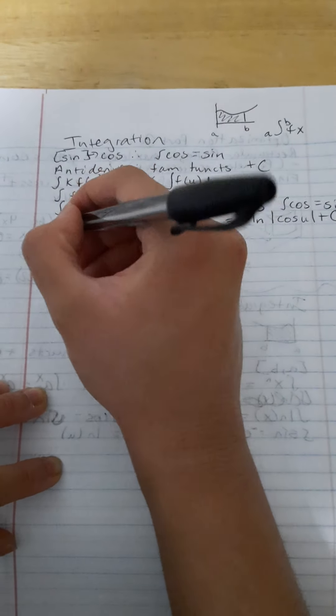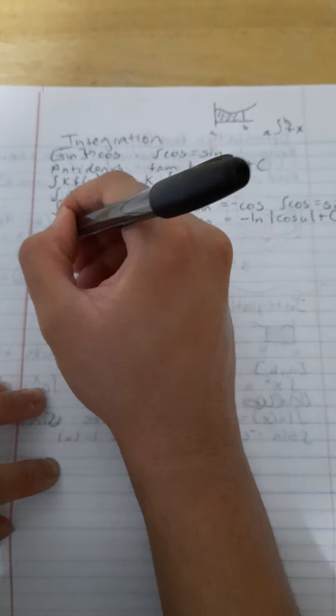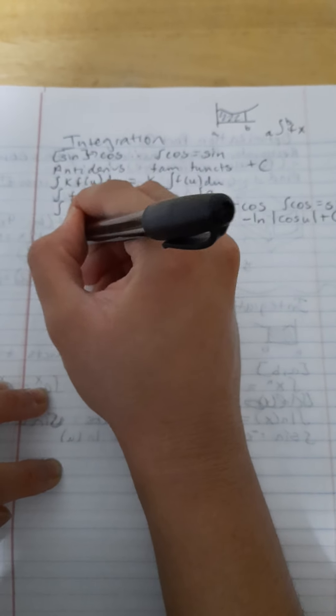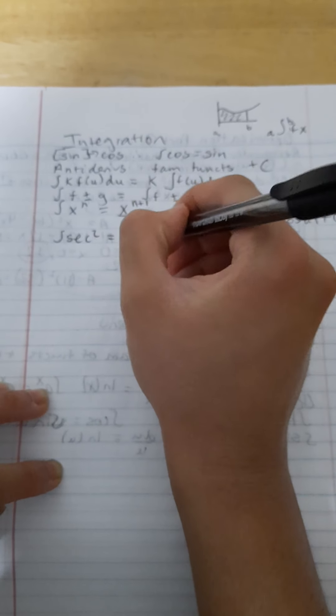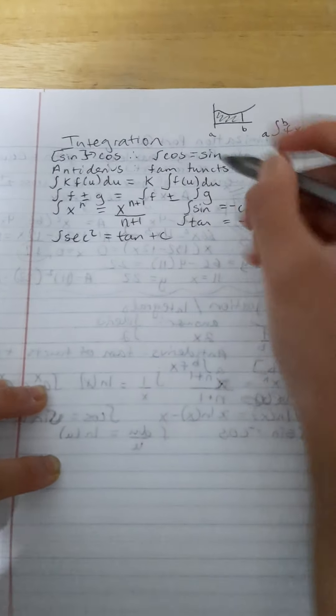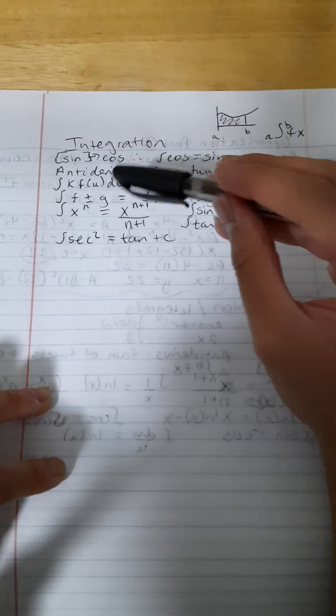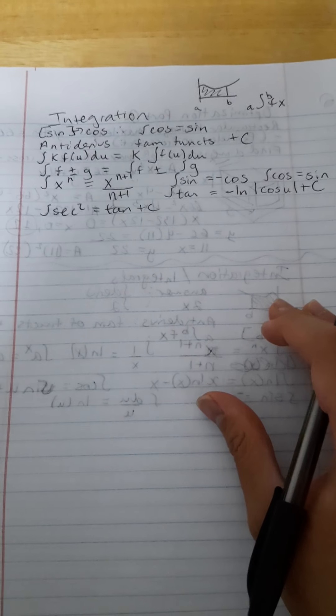If you match up some of the derivatives that you know, like the derivative of tan was secant squared. Well, the integral of secant squared is tan. Well, you also have to add plus c at the end of these, actually. All of them have to add plus c because we didn't put bounds.